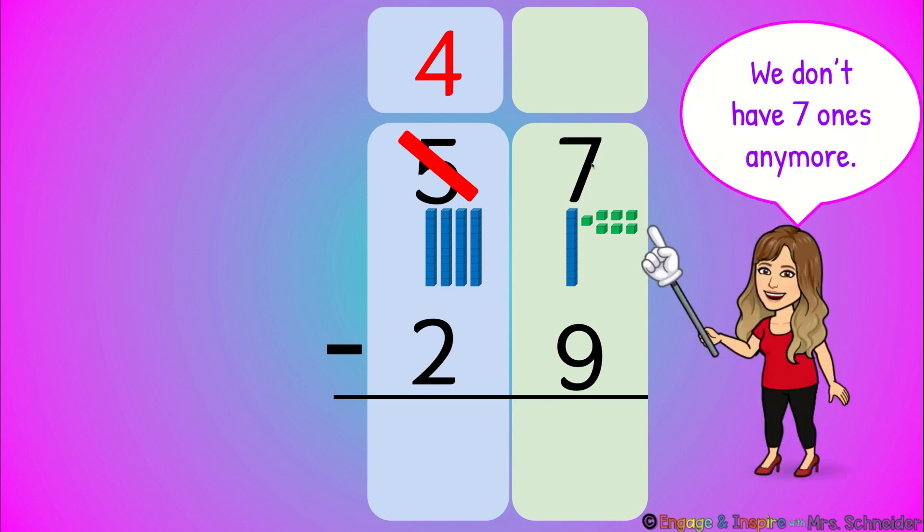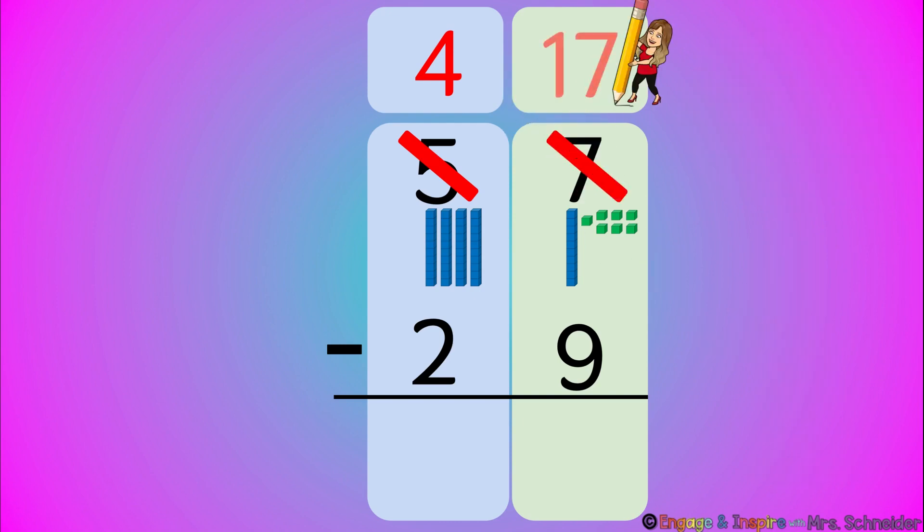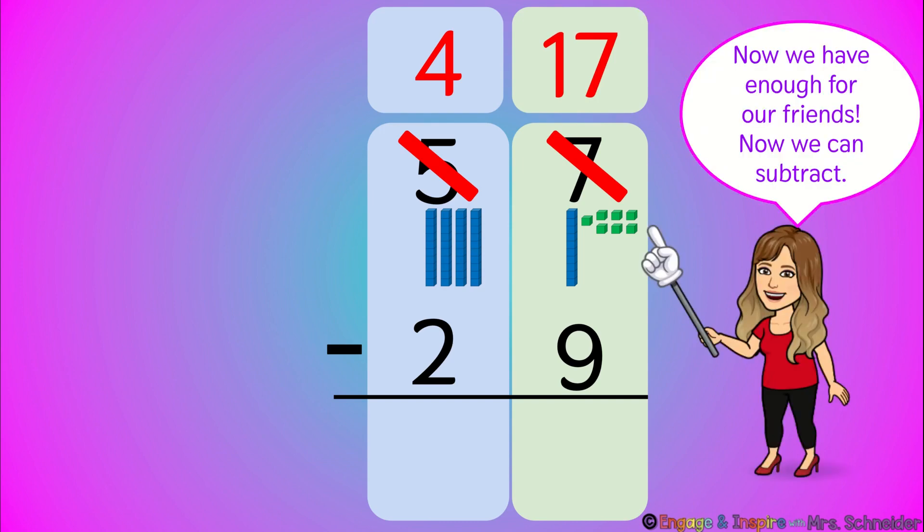We don't have seven ones anymore. How many do we have now? We have ten plus seven. So we cross out the seven and we're gonna change it to 17 because ten plus seven is 17. Now we have enough for our friends.